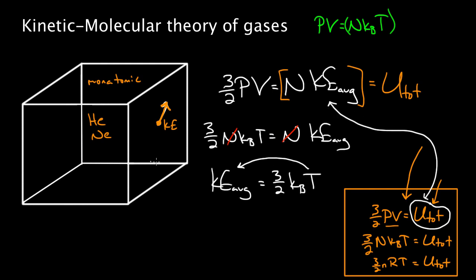By total internal energy for a monatomic ideal gas, that's just a fancy term for the total kinetic energy. People used to think thermal energy was something new and different — but Boltzmann told us it's just kinetic energy for the most part. For a monatomic ideal gas, it's only kinetic energy. So U-total is just another word for the total kinetic energy, though in thermodynamics you'll often hear it referred to as the total internal energy of the gas.